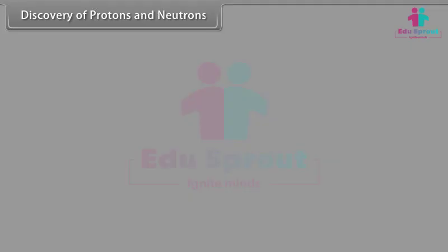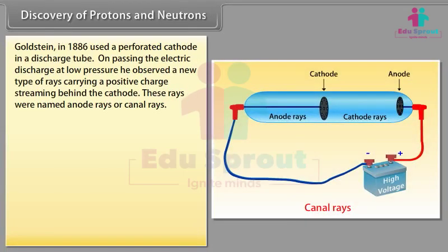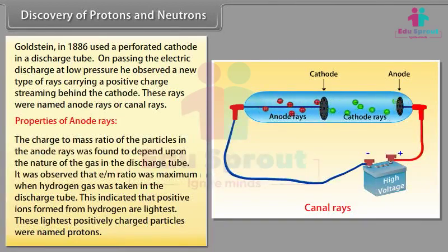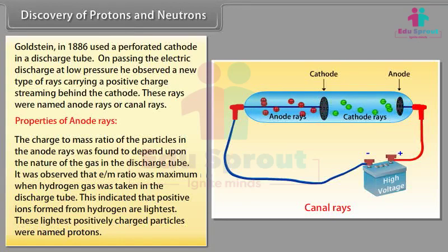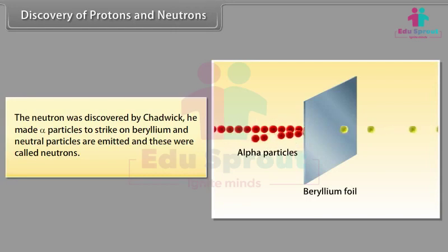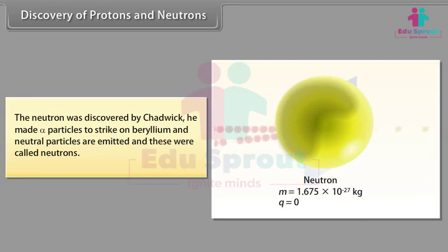Discovery of protons and neutrons: Goldstein in 1886 used a perforated cathode in a discharge tube. On passing electric discharge at low pressure, he observed a new type of rays carrying positive charge streaming behind the cathode — named anode rays or canal rays. The E/m ratio was maximum when hydrogen gas was used, indicating the lightest positive ions, named protons. Neutrons were discovered by Chadwick, who made alpha particles strike beryllium, emitting neutral particles called neutrons.